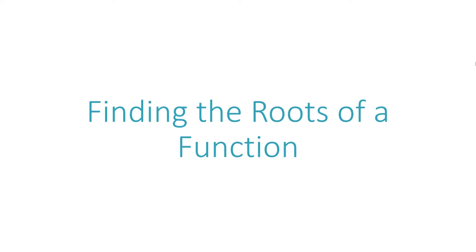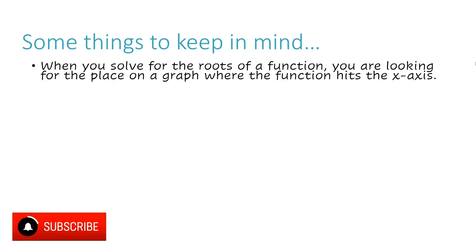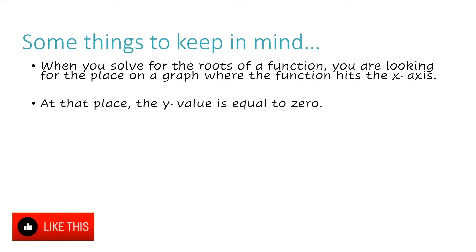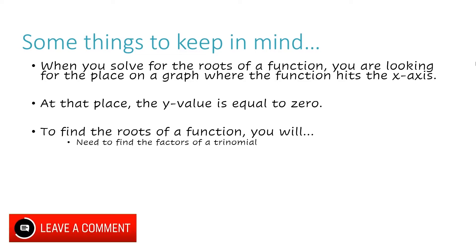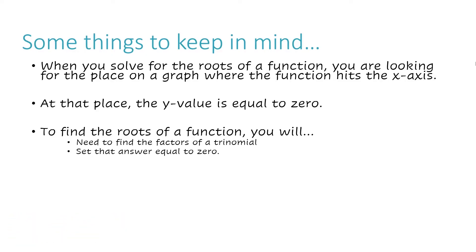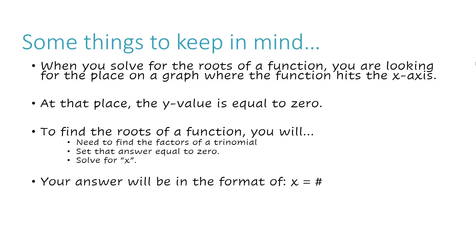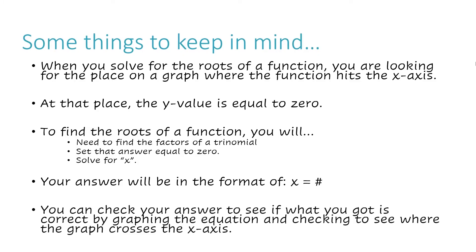Finding the roots of a function — some things to keep in mind. When you solve for the roots of a function, you are looking for the place on a graph where the function hits the x-axis. At that place, the y-value is equal to zero. To find the roots of a function, you will need to find the factors of a trinomial, then set that answer equal to zero, then solve for x. Your answer will be in the format of x equals a number. You can check your answer by graphing the equation and checking to see where the graph crosses the x-axis.